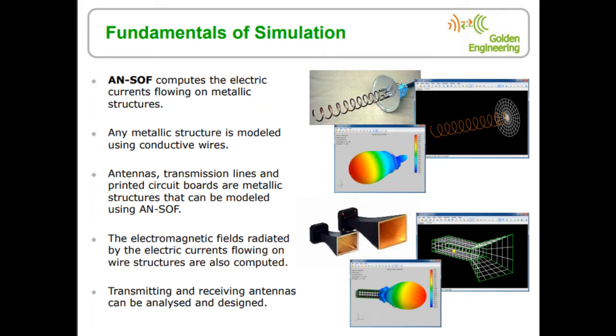And then we can run the calculation. First of all, AN-SOF will compute the current distribution along the wire structure. Then we can run the calculation of far field to get the radiation pattern. So first of all we define antenna geometry and frequency, second we obtain the current distribution, and third we obtain the electromagnetic field. The electromagnetic field can be a far field or a near field.